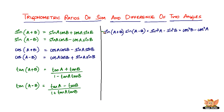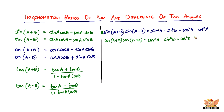So this is one of those results. Another result: cos of A plus B into cos of A minus B is going to give you cos squared A minus sine squared B, which is also equal to cos squared B minus sine squared A.